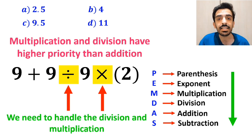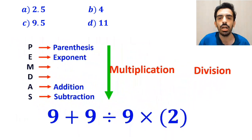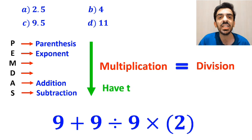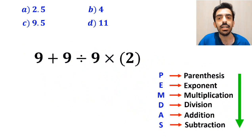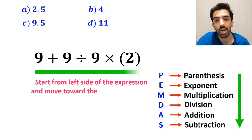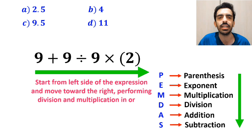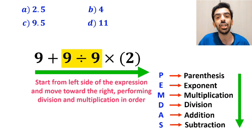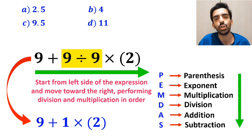However, it's very important to note that in the PEMDAS rule, multiplication and division have the same level of priority. In this case, the best thing to do is to start from the left side of the expression and move toward the right, performing division and multiplication in order. So first we perform the division between 9 and 9, which simplifies this expression to 9 plus 1 times 2.